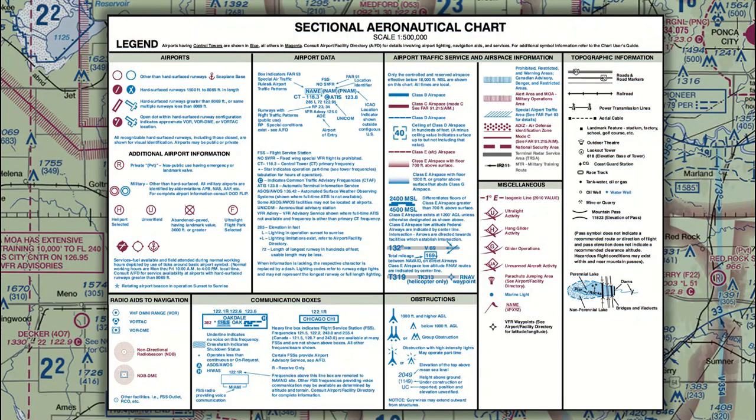Now we'll look at airfield and nav aid information located on the sectional chart. The sectional chart is jam-packed with great information, but like METARs and TAFs, the information is just gibberish if you don't take some time to learn what it all means.